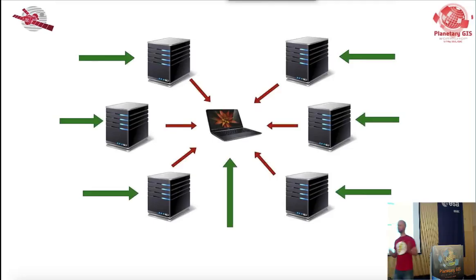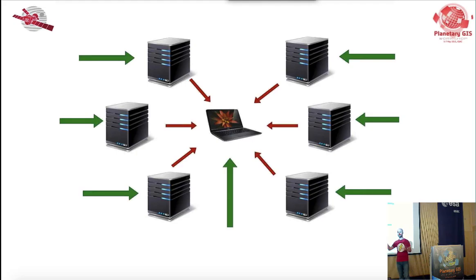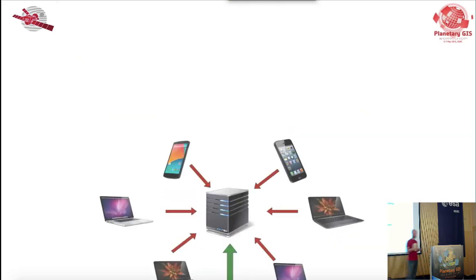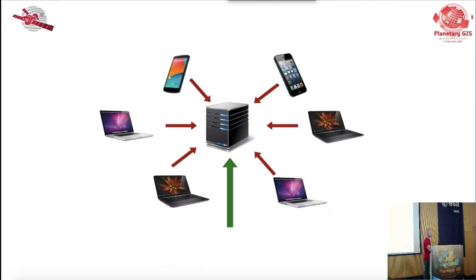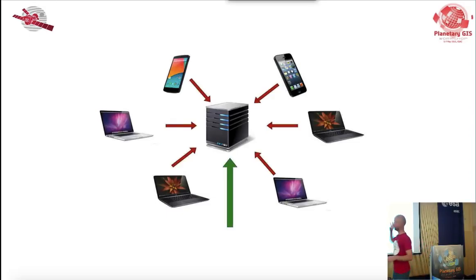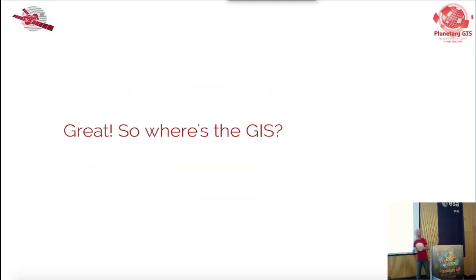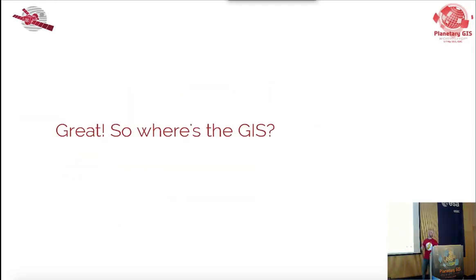The green arrows are meant to represent auxiliary data. In this paradigm, each instrument team often needed to go and get the auxiliary data themselves. This is what we want to do with BepiColombo: we want to centralize things. We want most of the work to be done in the SGS, and the instrument teams just connect to our system and use it.